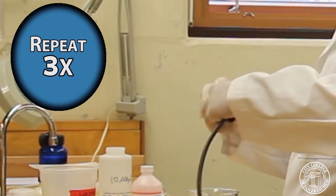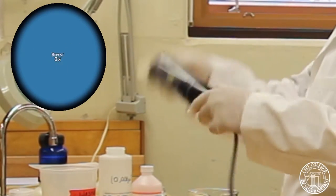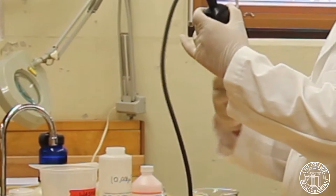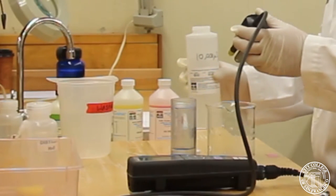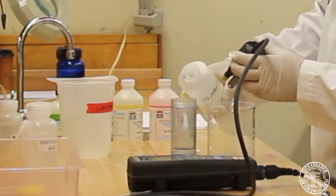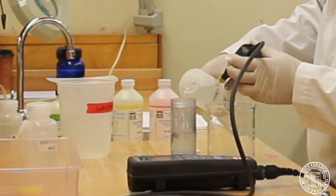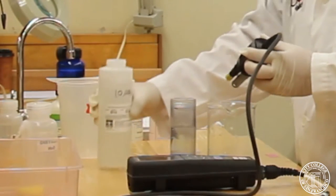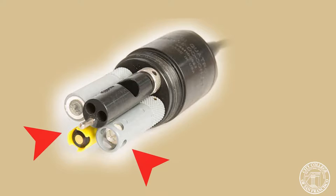Ideally three times, but for purposes of time, we're just going to do this once. Now we're going to fill the cup three-fourths with the conductance solution. And we want to make sure it covers the probe and the hole on the side.